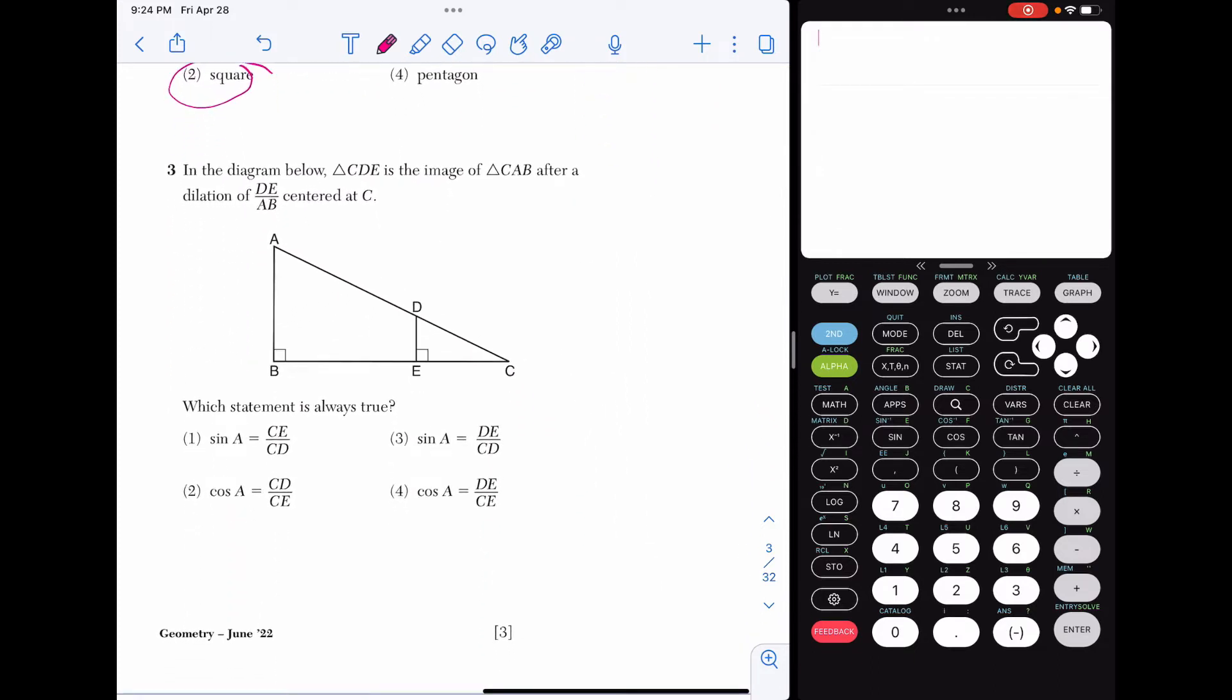Number 3, in the diagram below, triangle CDE is the image of triangle CAB after a dilation of DE over AB centered at C, which statement is always true. And we're looking at sine and cosine here. So we have to use SOHCAHTOA. Sine is opposite over hypotenuse. Cosine is adjacent over hypotenuse. And tangent, none are answer choices, but that would be opposite over adjacent.